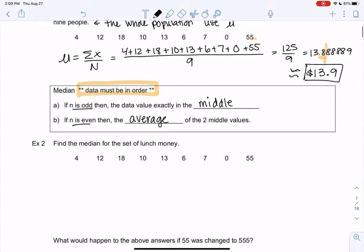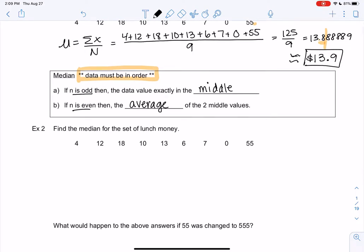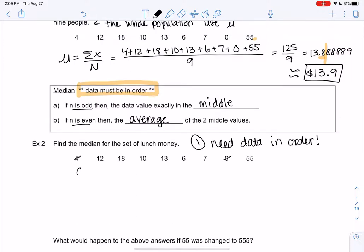So let's find the median of the lunch money. Step one is first we need the data in order. We can't just find the middle value if it's not in order. So I'm just going to rewrite it from smallest to largest: 0, 4, 6, 7, 10, 12, 13, 18, and 55.